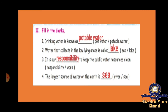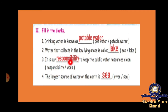Page number 57 has fill in the blanks. Drinking water is known as potable water. Water that collects in low-lying areas is called a lake. It is our responsibility to keep the public water resources clean. The largest source of water on earth is the sea — sea is bigger than a river.